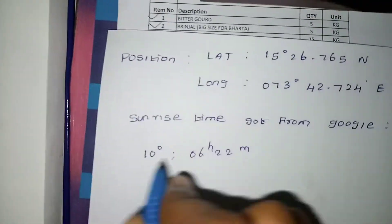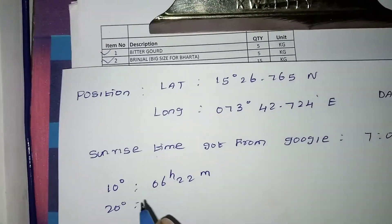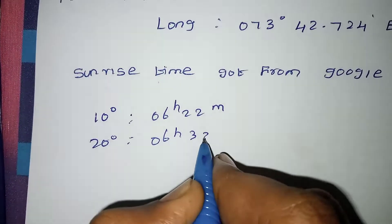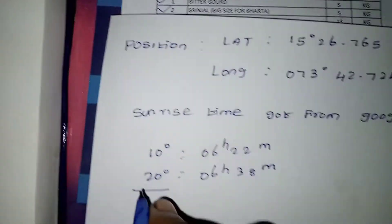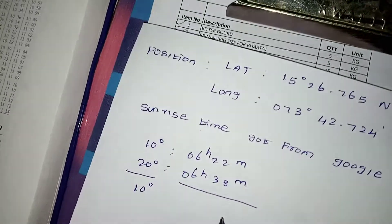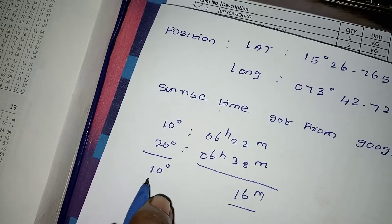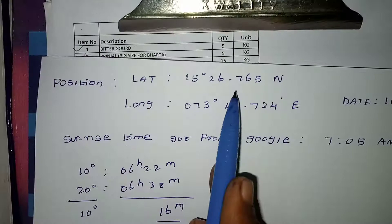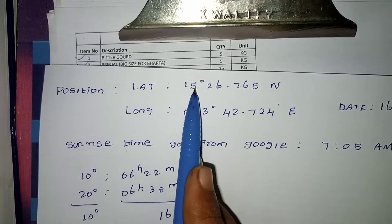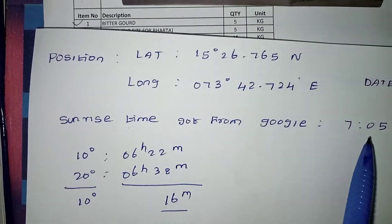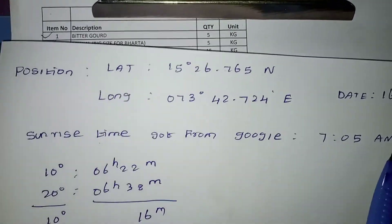The sunrise at 20 degrees is 06 hours 38 minutes. In between, 10 degrees — 16 minutes. OK: 10 degrees, 60 minutes; 15 degrees 26.76 — in the second, 15 degrees 26. The sunrise time from Google will be 8:05 AM. It will be complete.